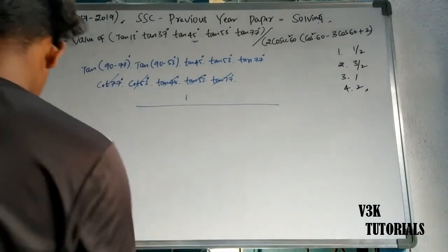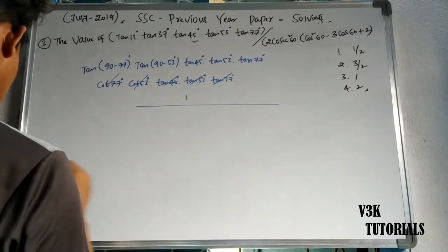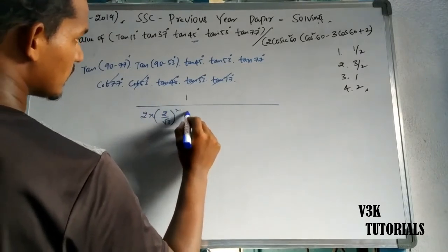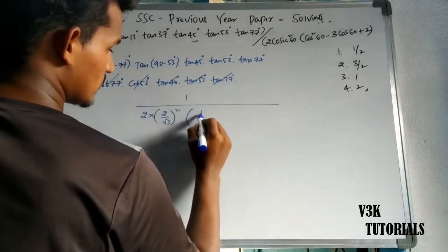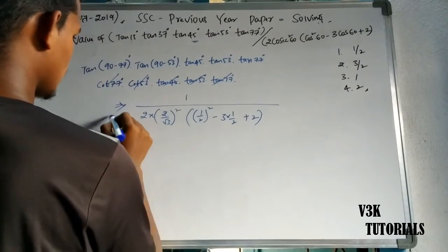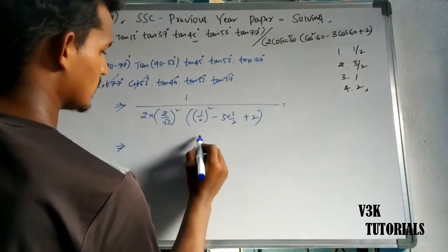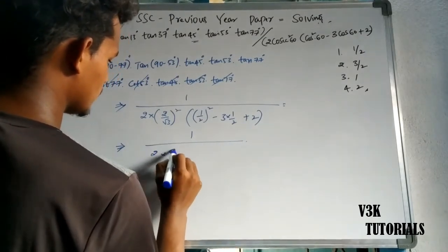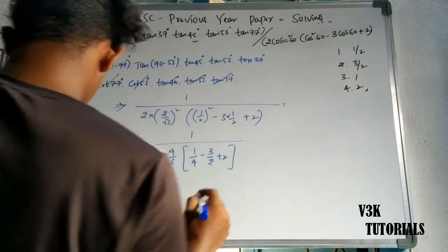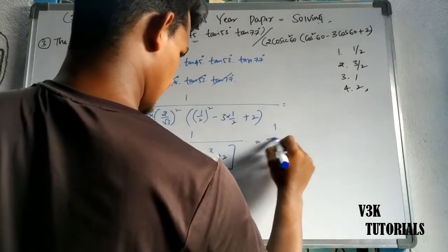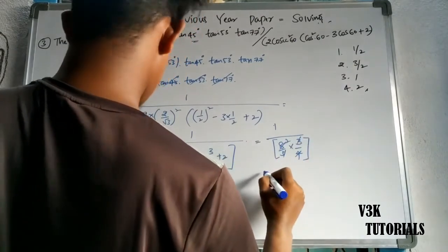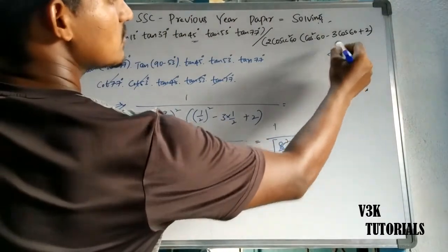Next, 2 cosec squared 60. Cosec 60 equals 2 by root 3, so cosec squared 60 equals 4 by 3. So we have 2 into 4 by 3 into cos 60, where cos 60 equals 1 by 2. That gives 3 into 1 by 2 plus 2 into 1 by 2, which simplifies to 3 by 2 plus 1, giving the answer as 1 by 2. So the correct answer equals option 1, which is 1 by 2.